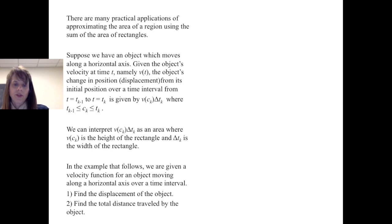So in the example that we'll see next, we're going to be given a velocity function for an object moving along a horizontal axis over a time interval. We're going to find the displacement of the object over that time interval, and then we're going to find the total distance traveled by the object on that time interval.